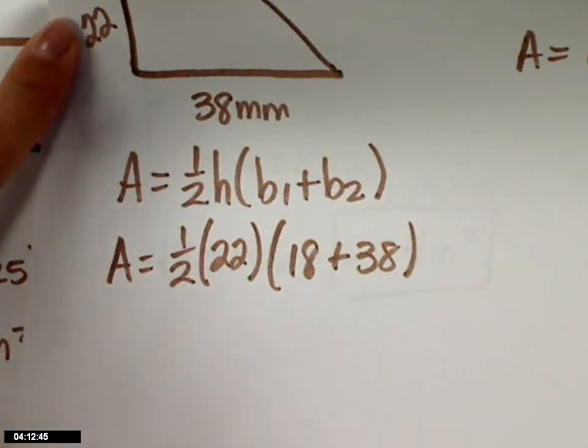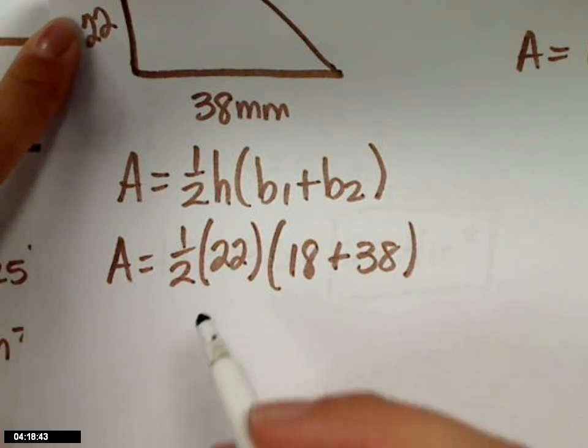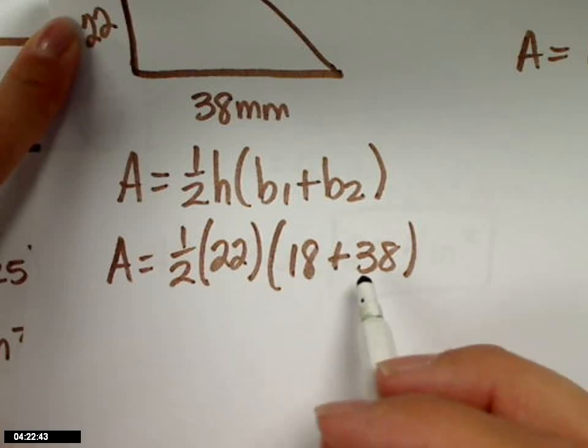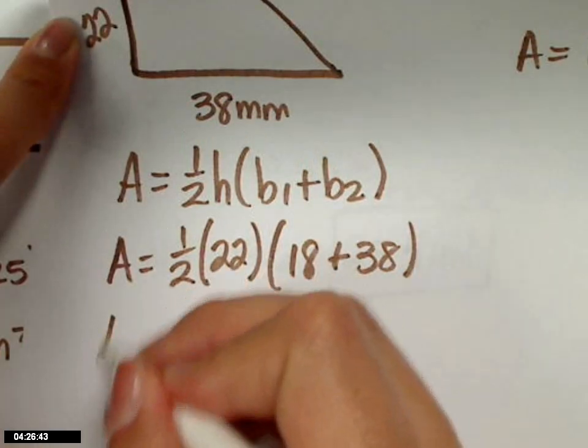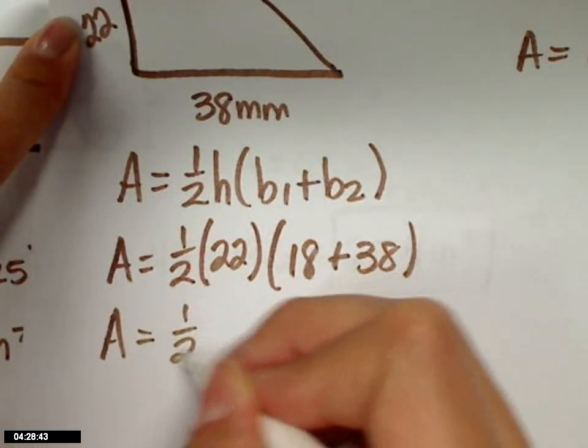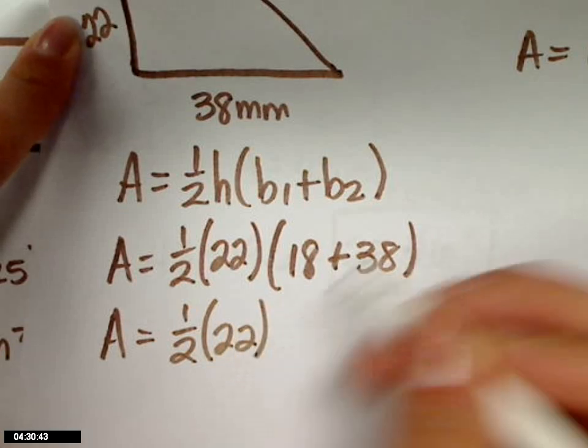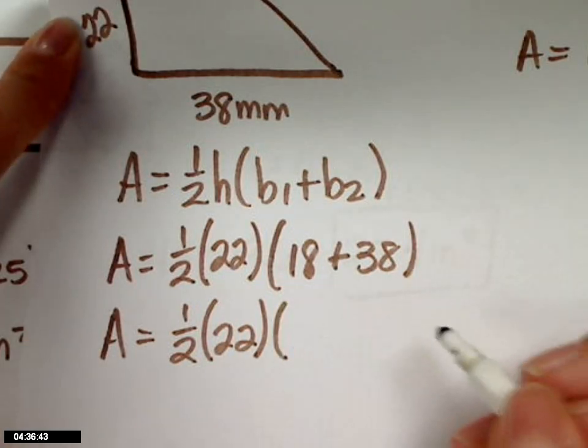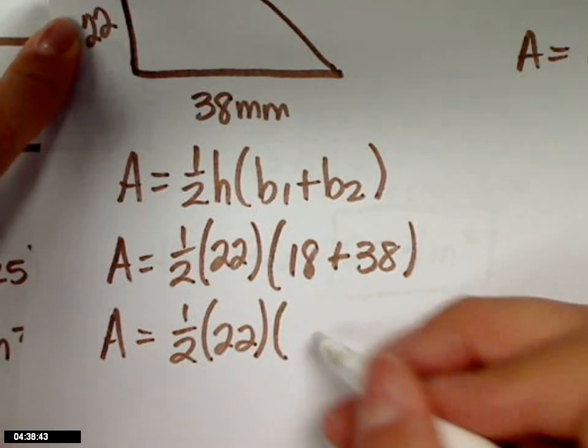Can I do this in whatever order I want? Yeah, you sure can. So I can multiply 22 times 18 or 22 times 38? No, you have to add them. Oh, thank you. I have to add them first. What's 18 and 38? 56.